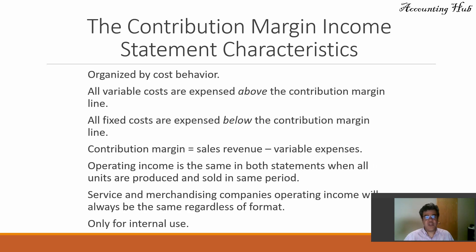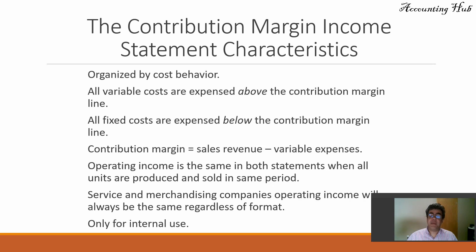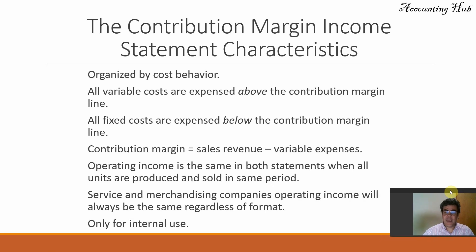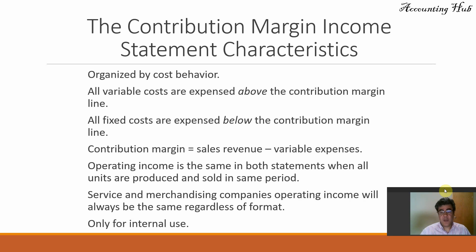The contribution margin income statement is organized by cost behavior: variable and fixed. All variable costs are expensed above the contribution margin line — that's why they are called variable expenses. All fixed costs are expensed below the contribution margin line, added with fixed operating expenses. Contribution margin is sales revenue less variable expenses. Operating income is the same in both statements when all units are produced and sold in the same period. For service and merchandising companies, operating income will always be the same regardless of format, because they don't have fixed manufacturing overhead — it is only for internal use.